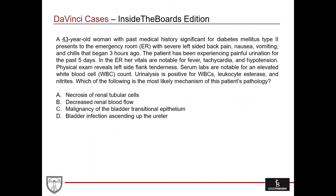For this case, we've got a 43-year-old woman — a middle-aged woman — with a past medical history significant for diabetes mellitus type 2, who presents to the emergency room with severe left-sided back pain, nausea, vomiting, and chills that all began three hours ago. This is a pretty acute presentation. The patient has also been experiencing painful urination for the past five days, and then on day five she's now experiencing these severe symptoms. The thing that everyone thinks about with painful urination is possibly a UTI, especially in a middle-aged woman, but there are some other things we'll consider as we move forward.